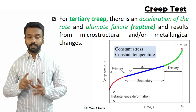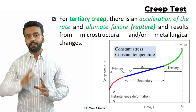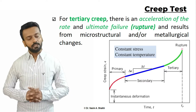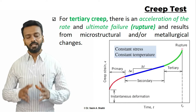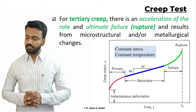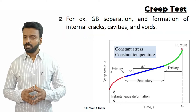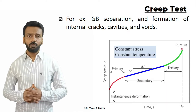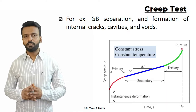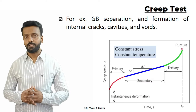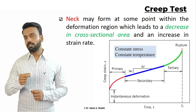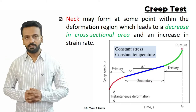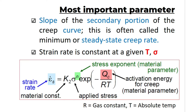The third stage is the tertiary stage, where the creep rate accelerates at a very high rate and the material experiences failure. This happens due to microstructural and metallurgical changes such as grain boundary separation, formation of internal cracks, cavities or voids. Necking may also be observed, where the cross-sectional area of the material decreases and the strain rate increases.